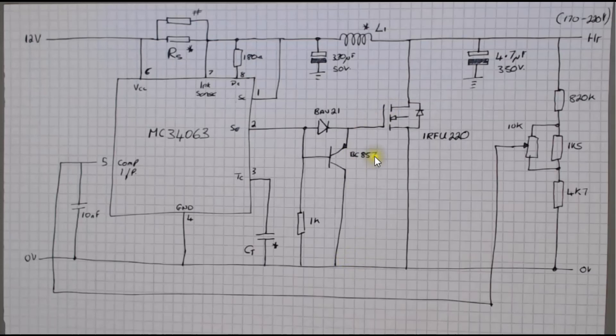So that speeds up the turnoff. The FET is a 250 volt FET I think in that region because obviously the supply output is going to be 170 to 220 volts.